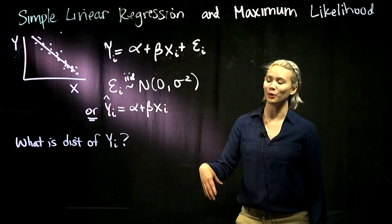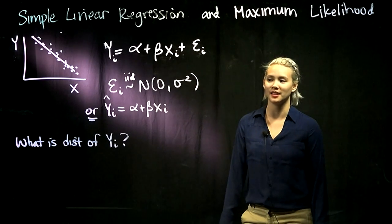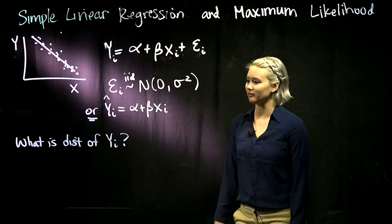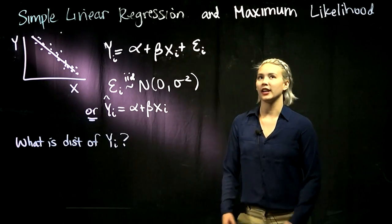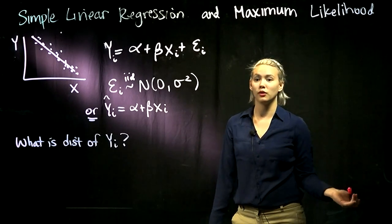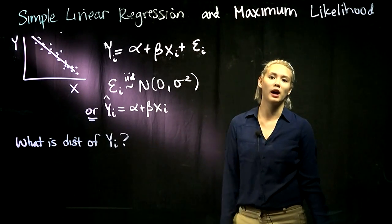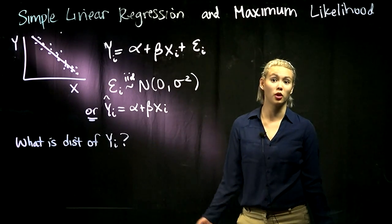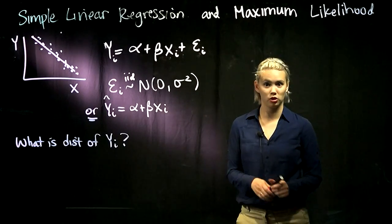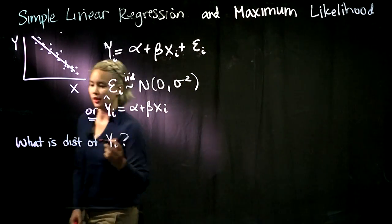Another way we can write it is Ŷ_i equals alpha plus beta X_i. So if we want to do maximum likelihood, we know that we need to find the distribution of these Y_i's. That's the first thing we need to do.